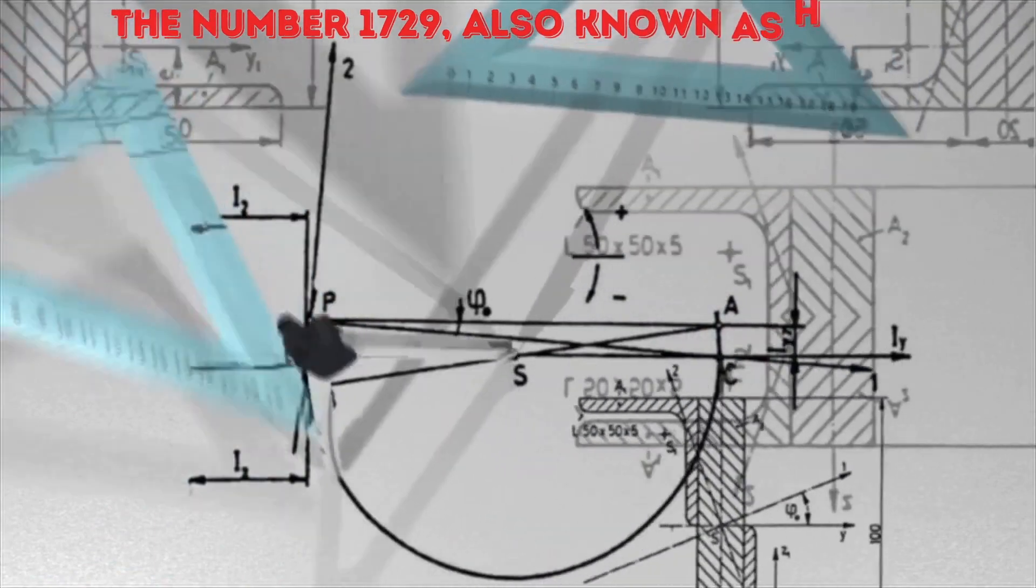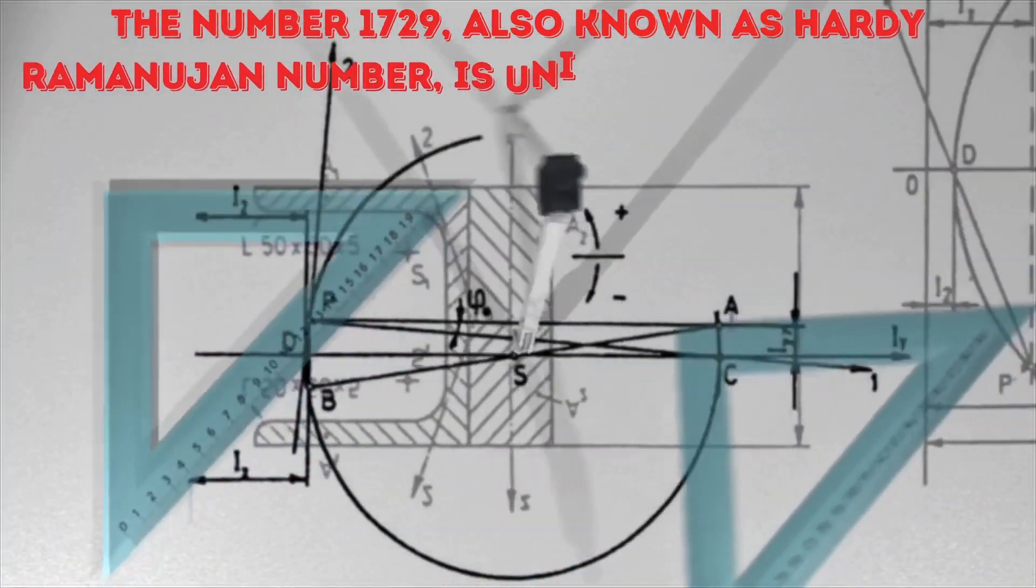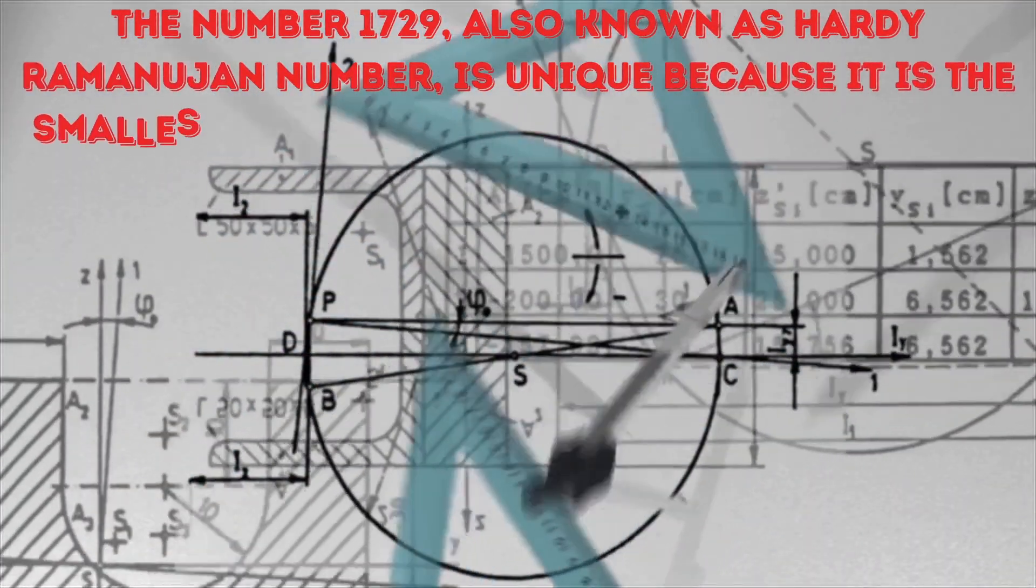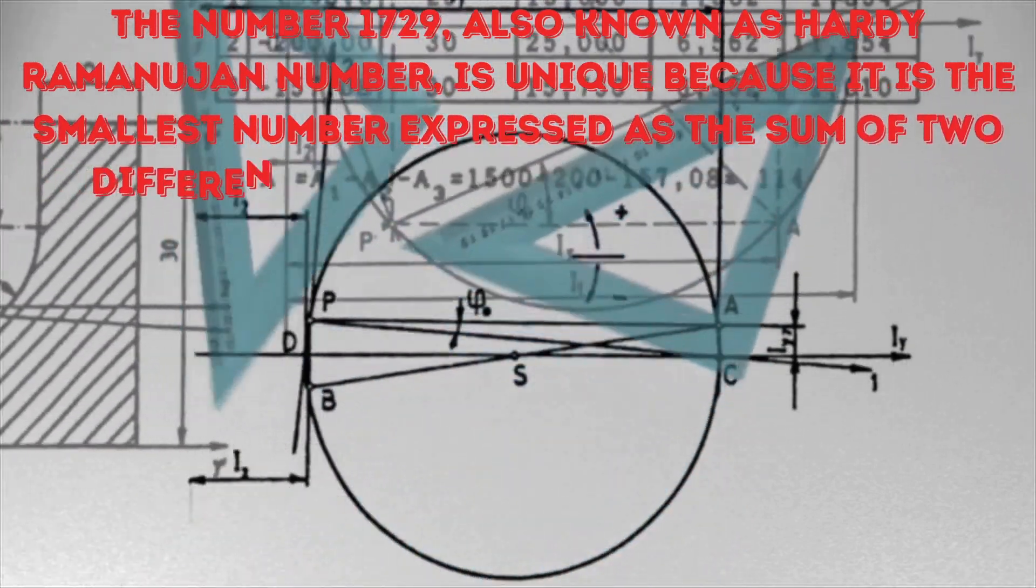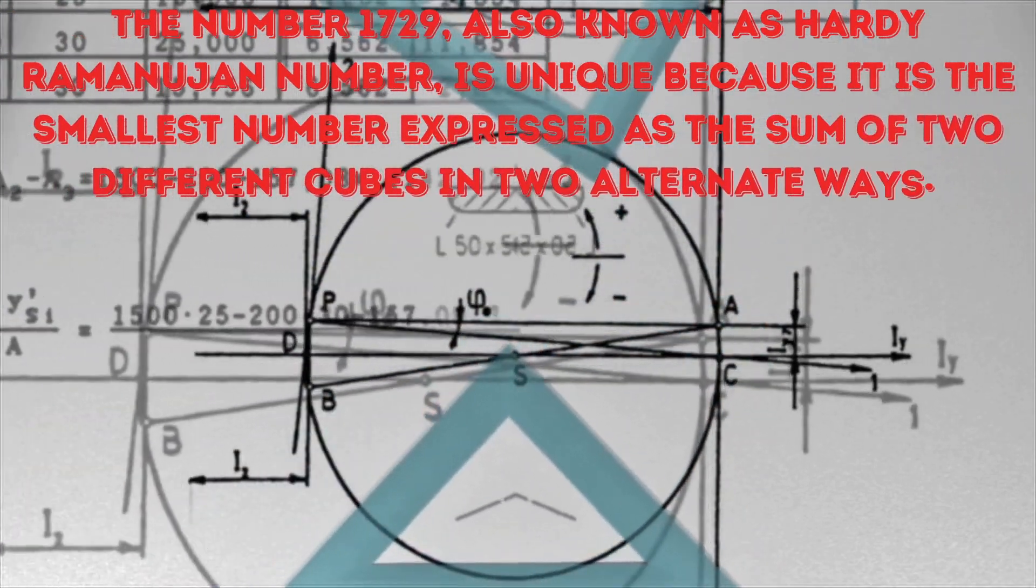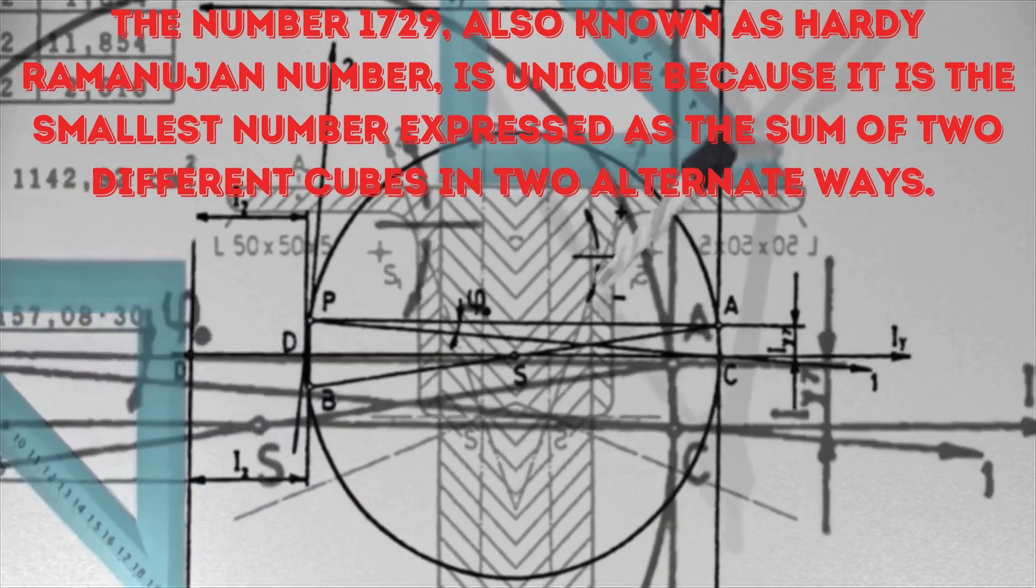The number 1729, also known as Hardy-Ramanujan number, is unique because it is the smallest number expressed as the sum of two different cubes in two alternate ways.